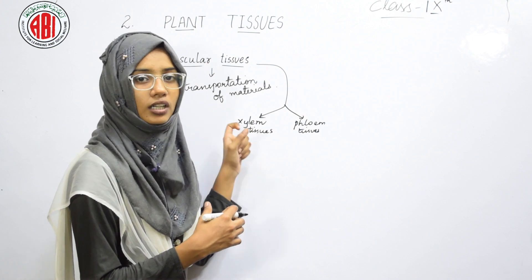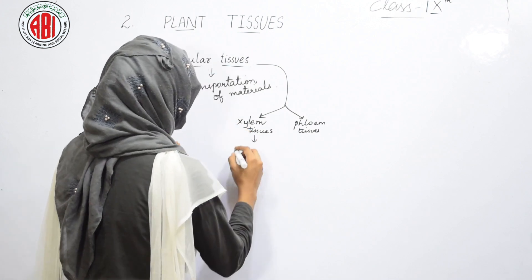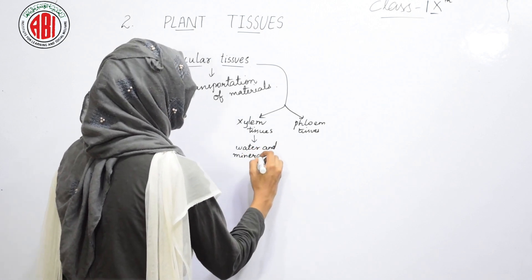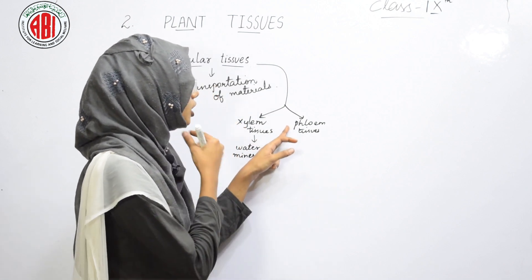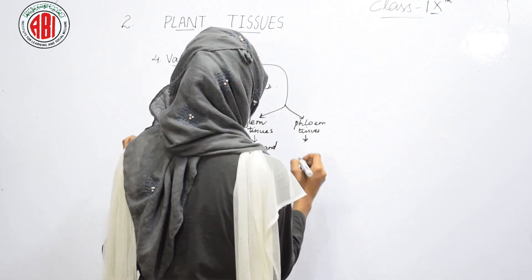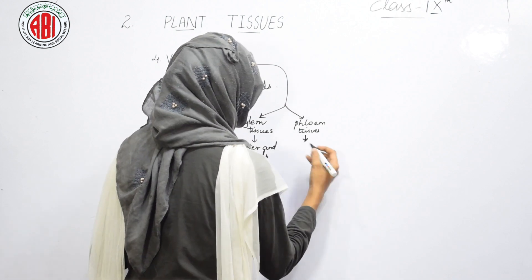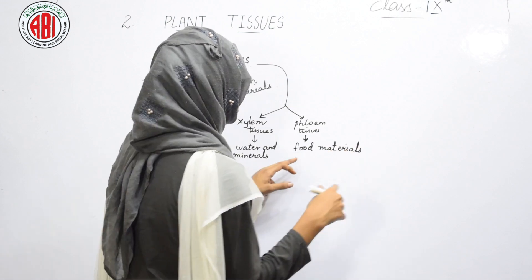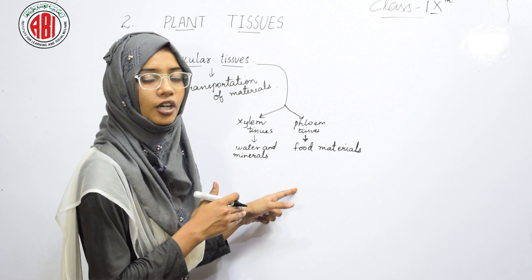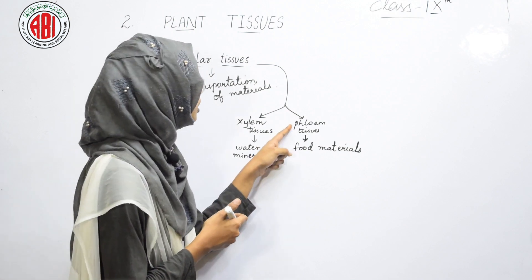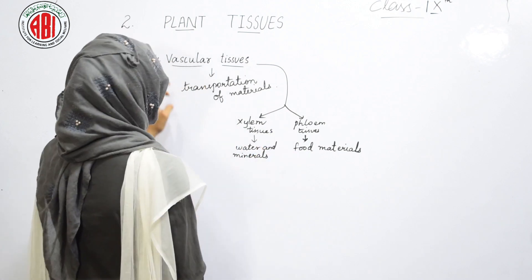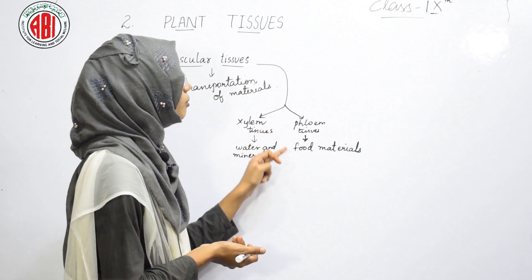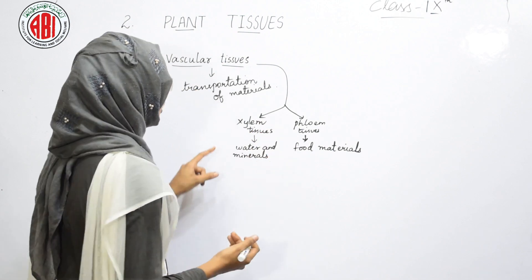Vascular tissues are classified into two main types: xylem tissues and phloem tissues. Xylem tissues are conductive tissues which help in the transportation of water and minerals from the soil to the different parts of the plant. Phloem is a conductive tissue which helps in carrying out the conduction of food material prepared in the leaves to the different parts of the plant.